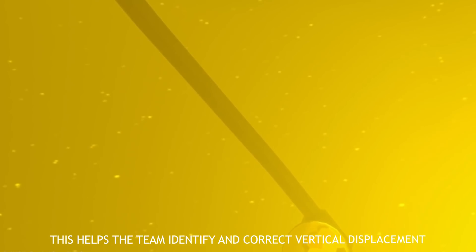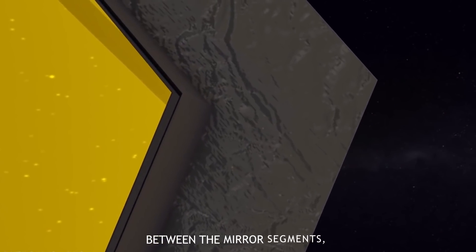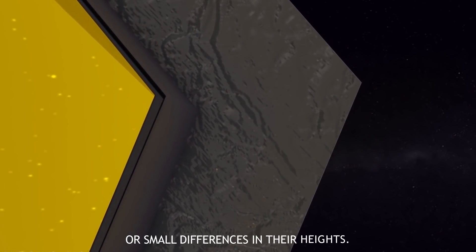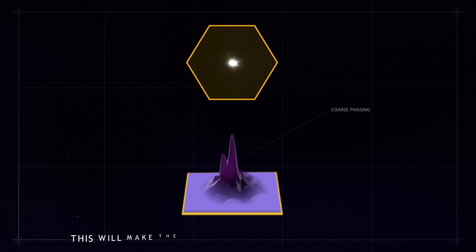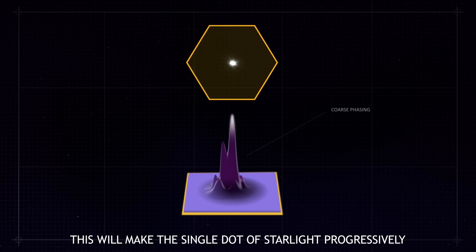This helps the team identify and correct vertical displacement between the mirror segments or small differences in their heights. This will make the single dot of starlight progressively sharper and more focused in the coming weeks.